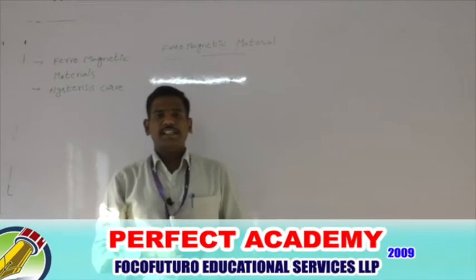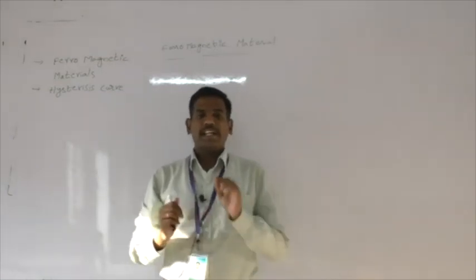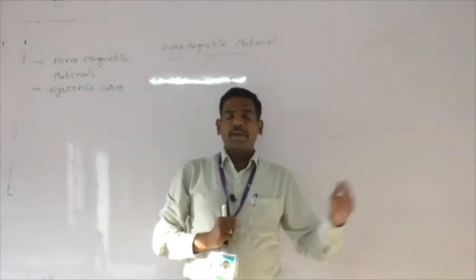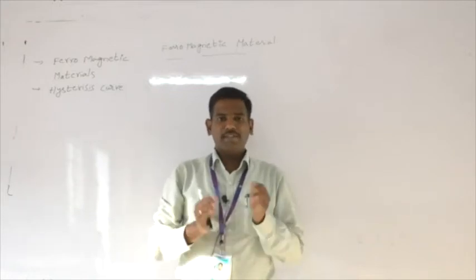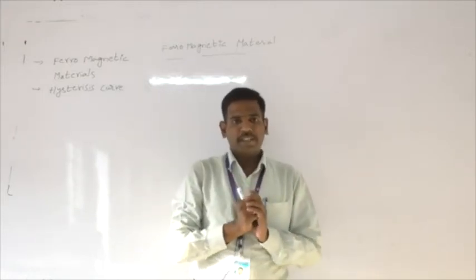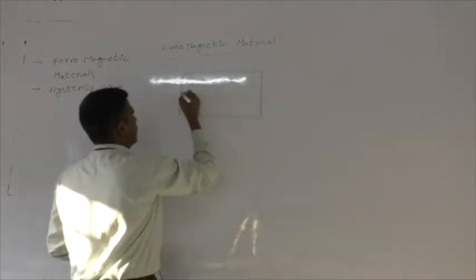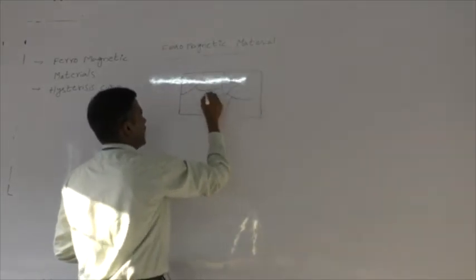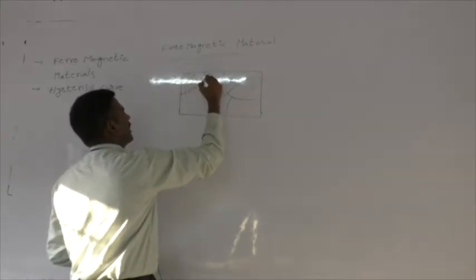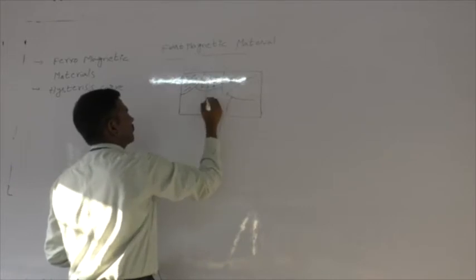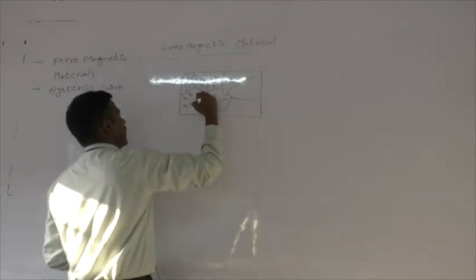The reason behind ferromagnetic nature is this: just like paramagnetic materials, ferromagnetic materials also have tiny atomic magnets, but unlike paramagnetic materials, in ferromagnetic materials those tiny atomic magnets are grouped together to form a domain. The material has different regions called domains, where all the tiny magnetic moments are aligned in one direction.